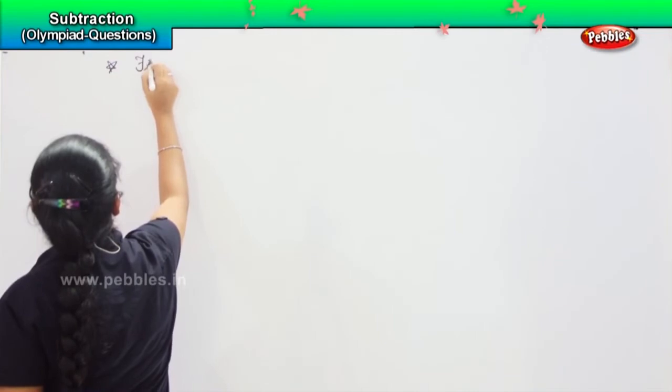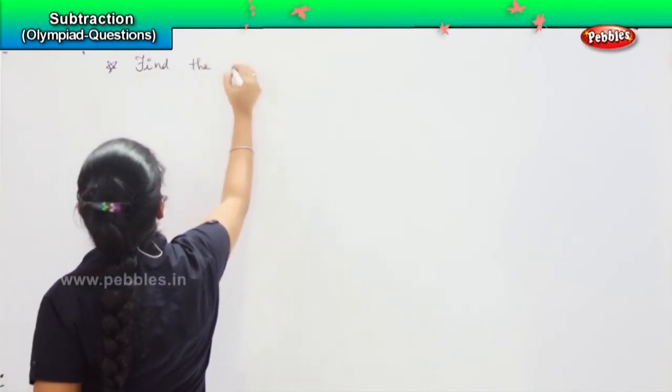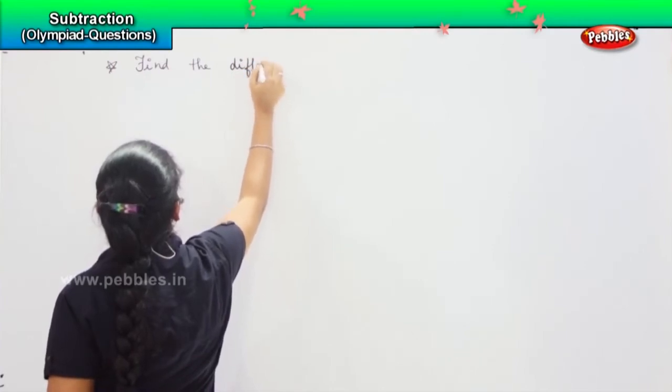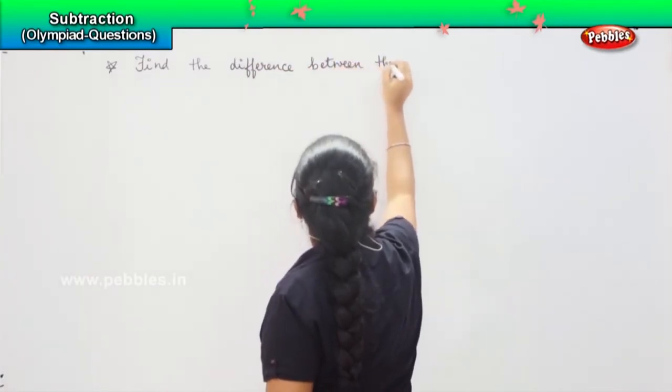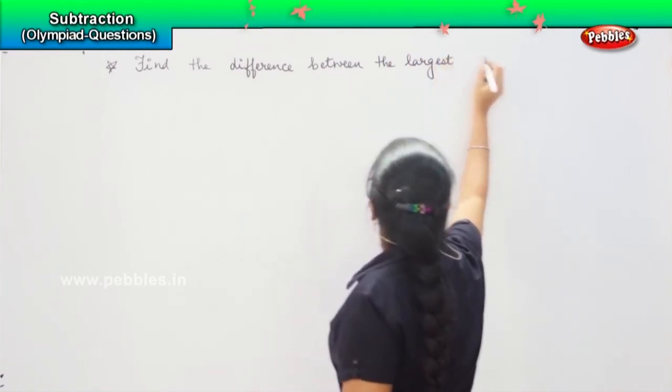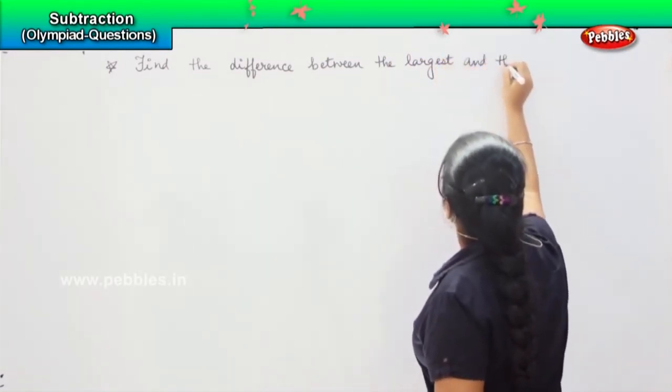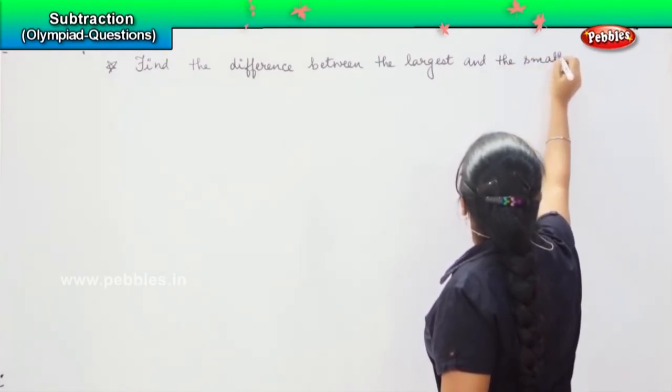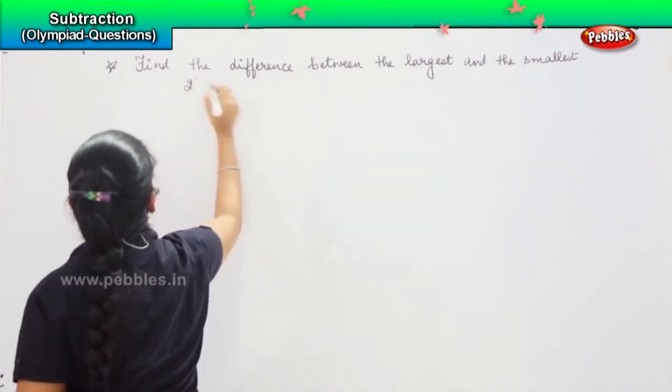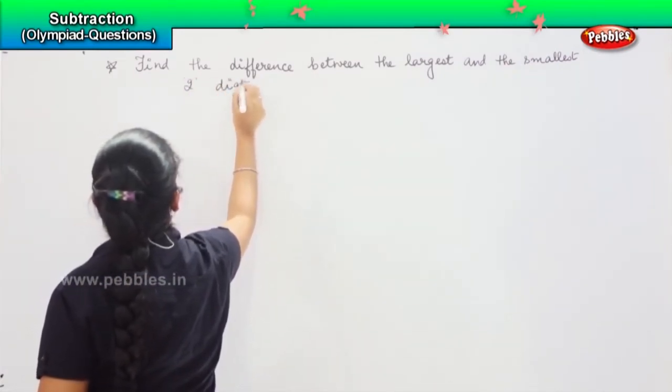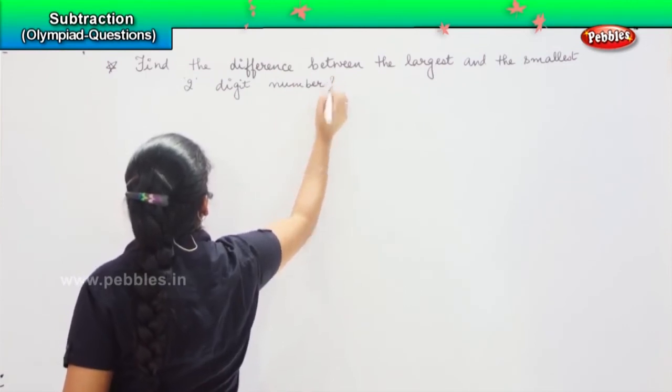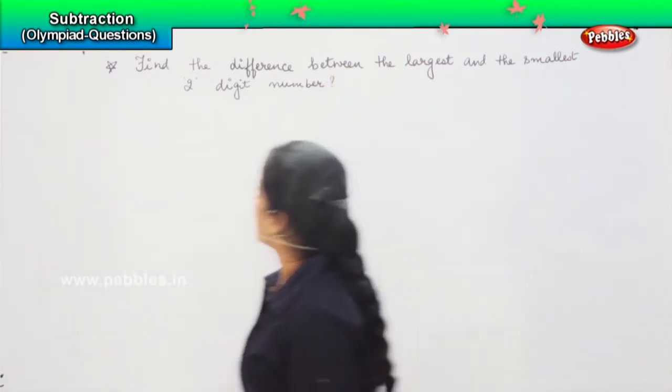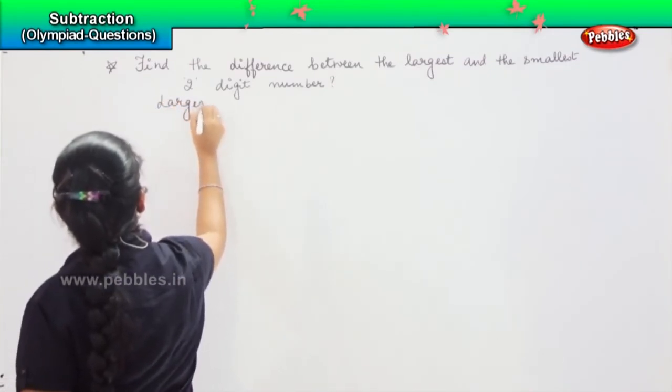The next question is again little tricky. You need to find the difference between the largest and the smallest two-digit number. So, the question says that you need to find the difference between the largest and the smallest two-digit number. So, how are you going to solve? First, tell me what is the largest two-digit number?